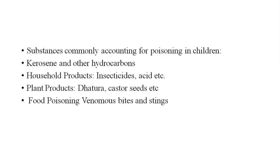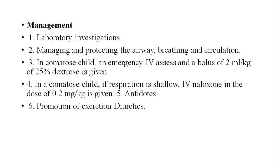Substances commonly encountered in poisoning in children: kerosene and other hydrocarbons, household products like insecticide and acid, plant products like datura and pesticides, food poisoning, venomous bites and stings. Management: laboratory investigation, manage and protect the airway, breathing, and circulation. In a comatose child, emergency IV access with a bolus of 2 mg per kg of 25% dextrose is given. If respiration is shallow, IV naloxone at a dose of 0.2 mg per kg is given. Antidotes and promotion of excretion with diuretics are also used.